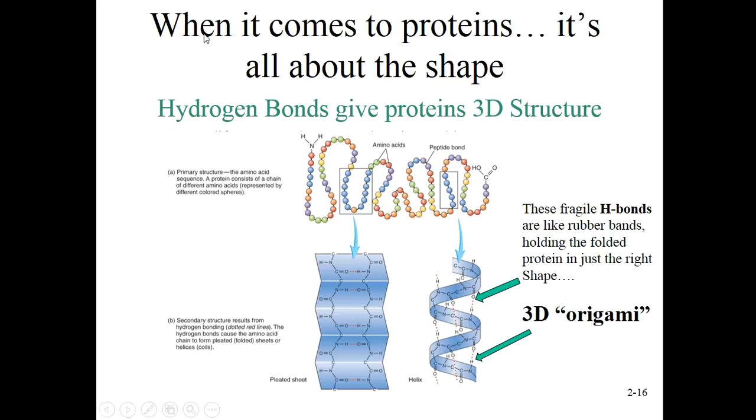My point is each of these proteins has its own unique three-dimensional shape. And ultimately, it's the hydrogen bond location that gives the proteins their three-dimensional structure. These fragile hydrogen bonds are like rubber bands holding the folded protein into just the right shape. Think of it like 3D origami. The difference between the little crane and the little frog is where it folds.